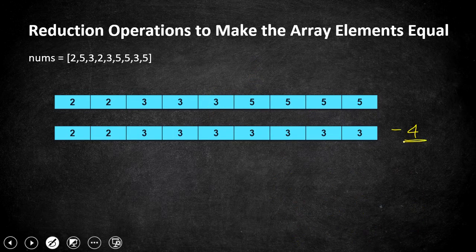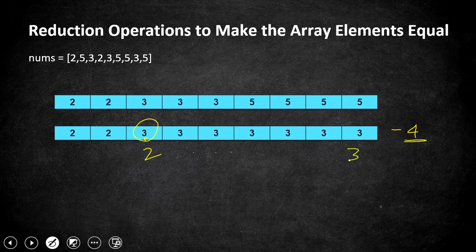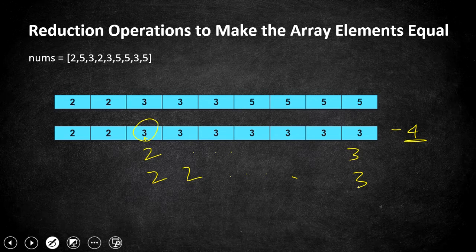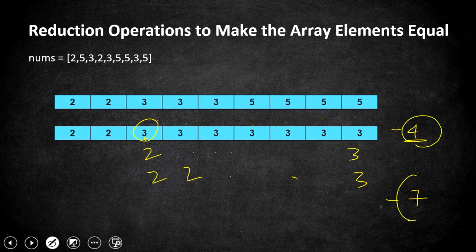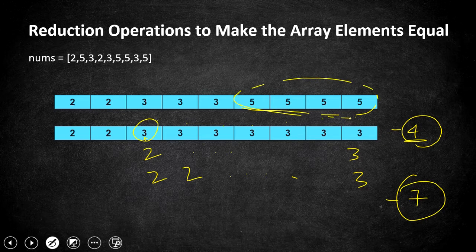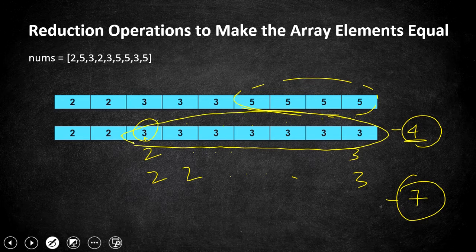After four steps we have an array with two twos and seven threes. Our next task is to convert all threes to two. Starting from the smallest index, we convert one three to two at each step. This takes as many steps as there are threes — seven threes means seven more steps. Overall it took four plus seven, which is eleven steps to make the array equal. The pattern is: however many times an element appears, that many steps it takes to convert it to the next largest element.